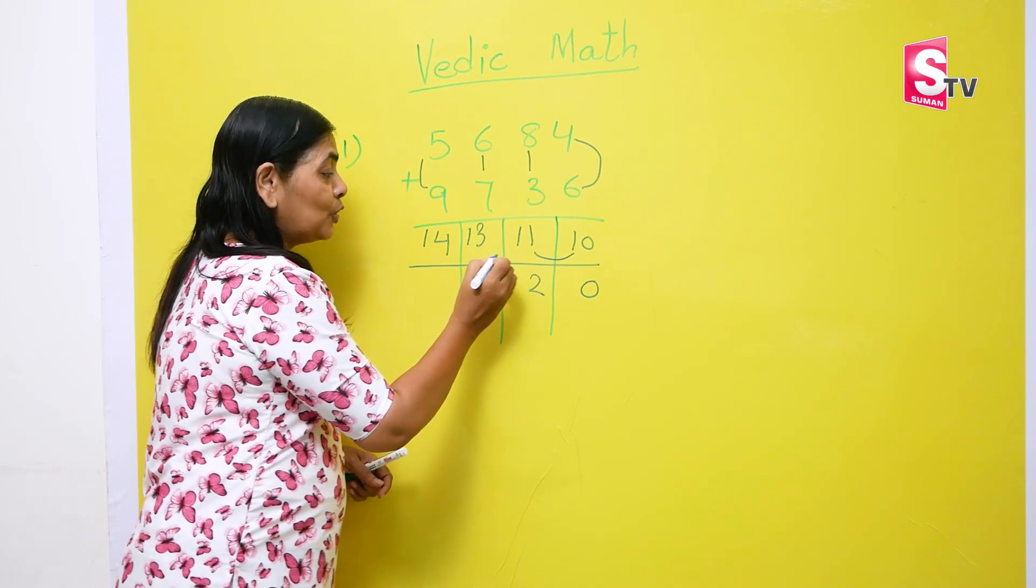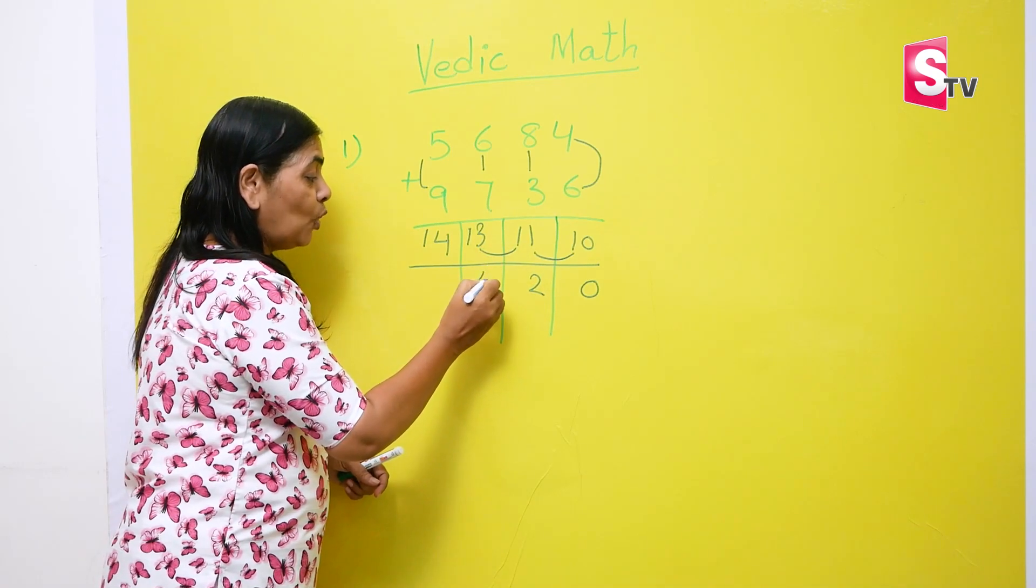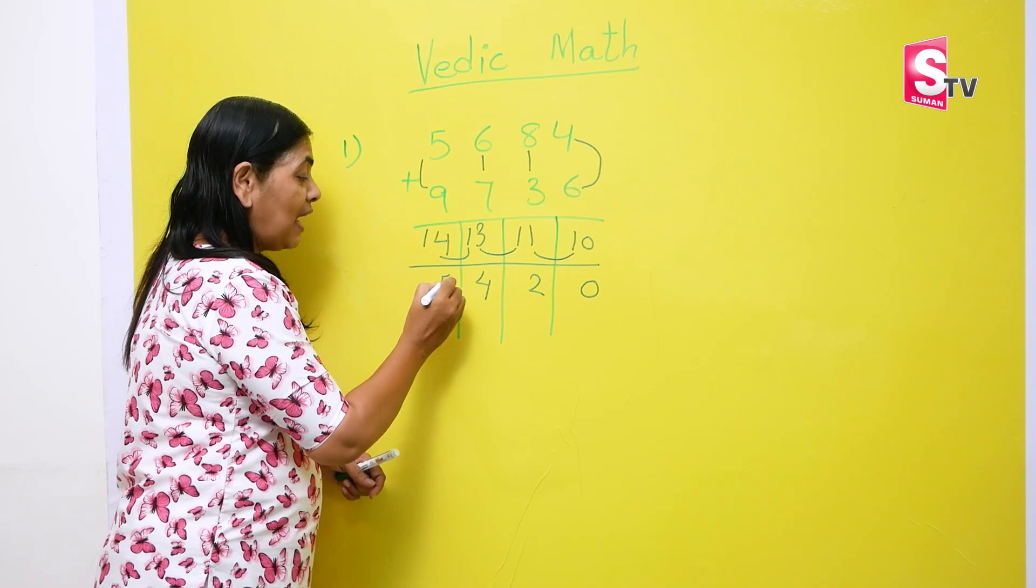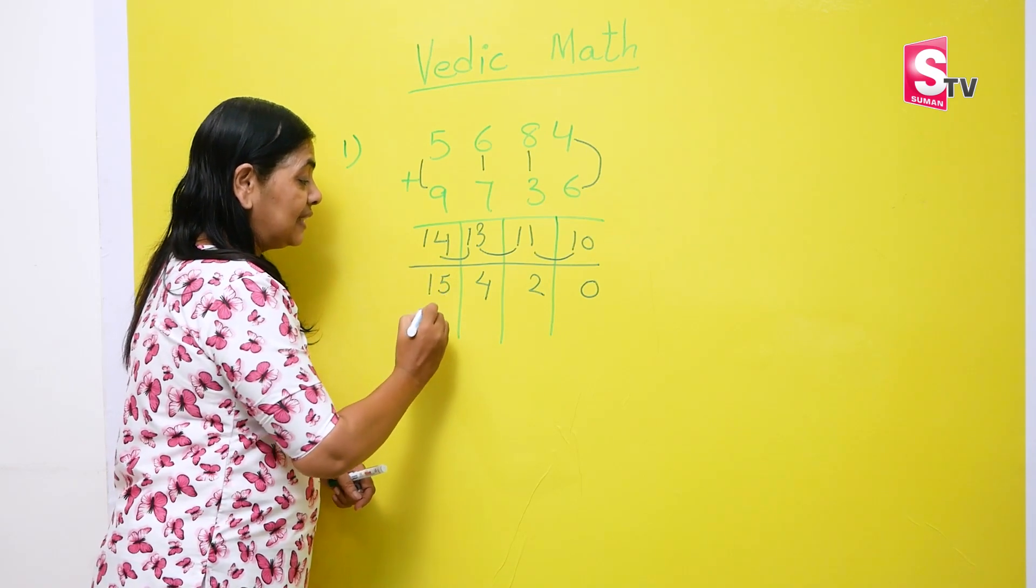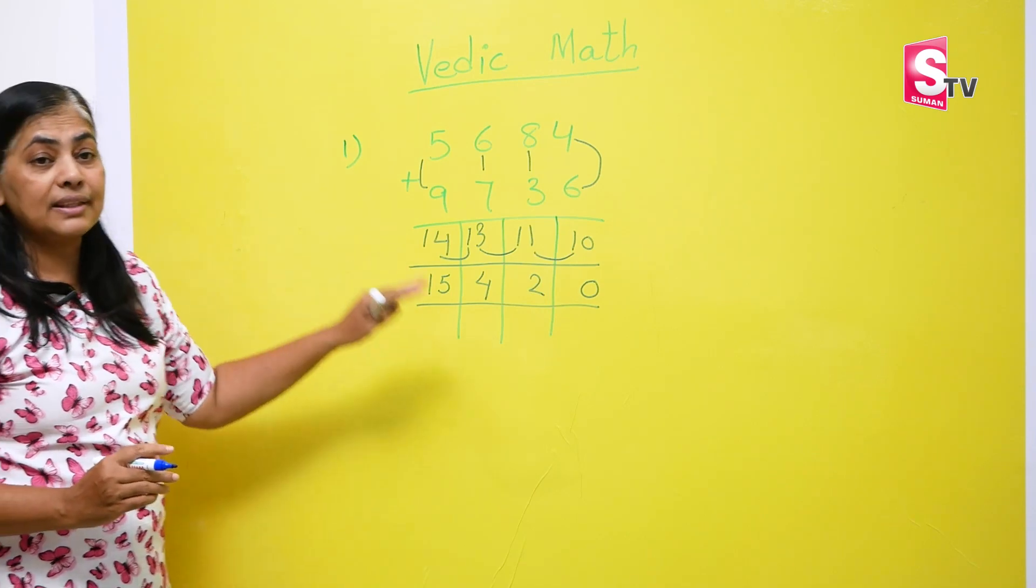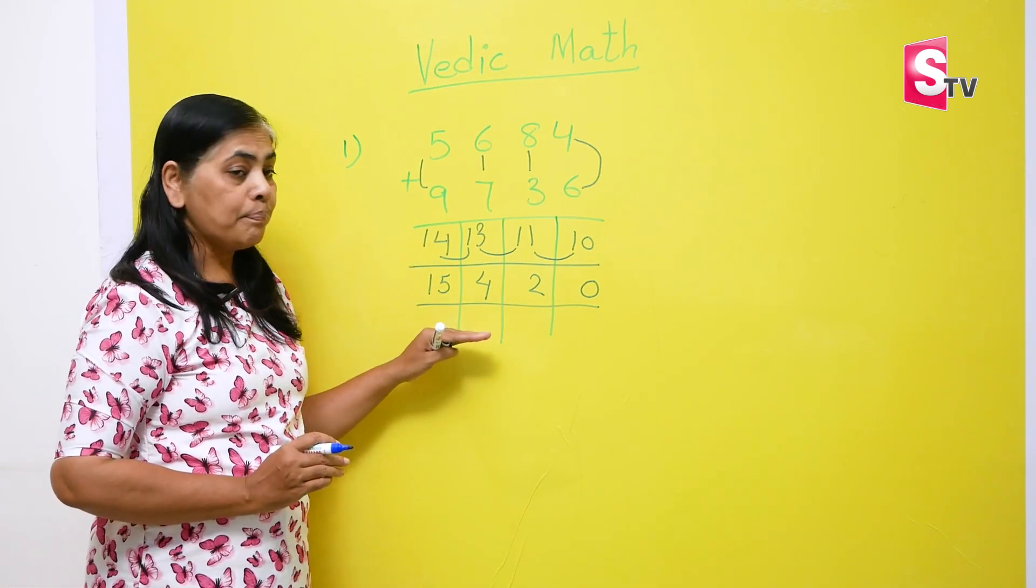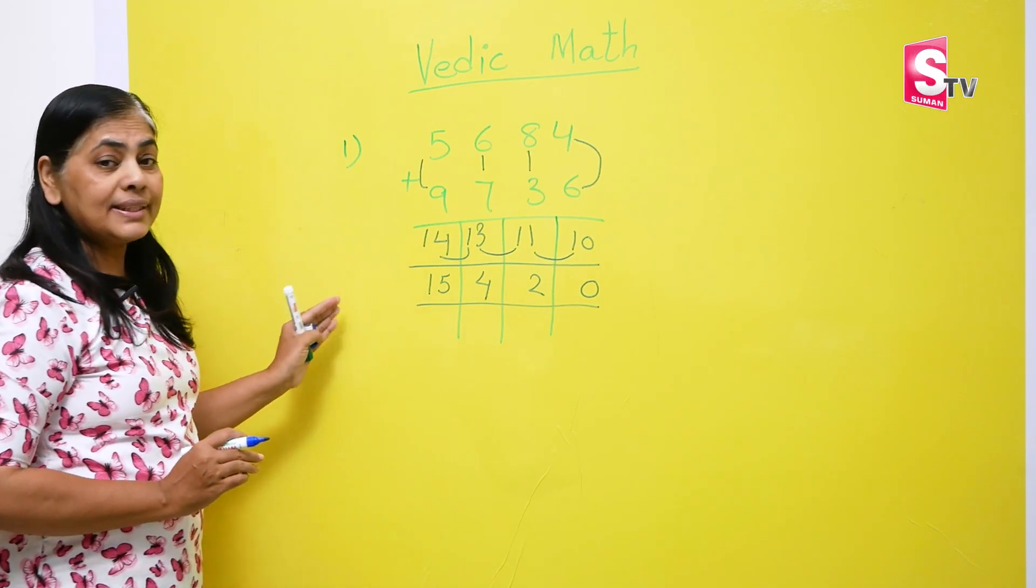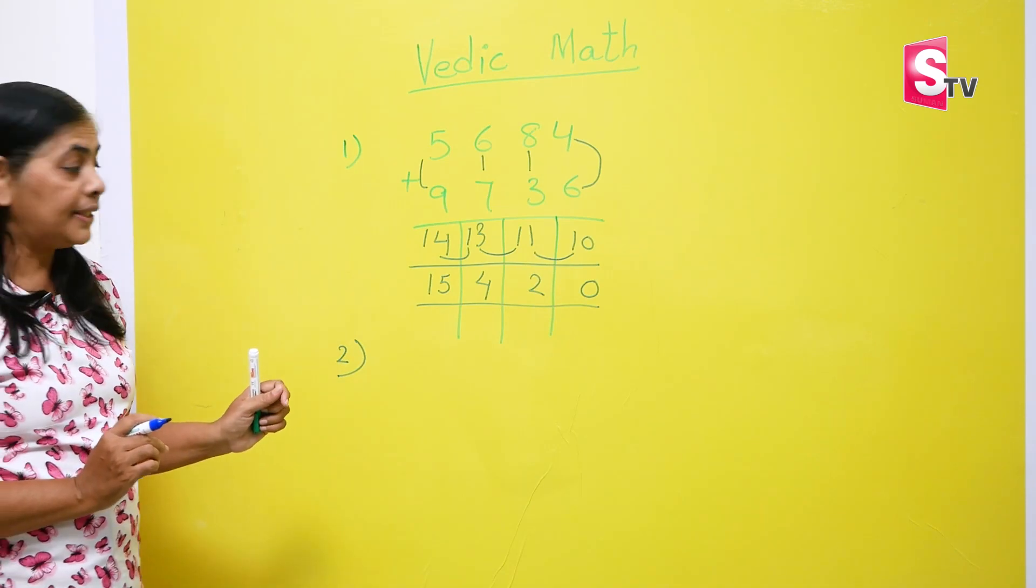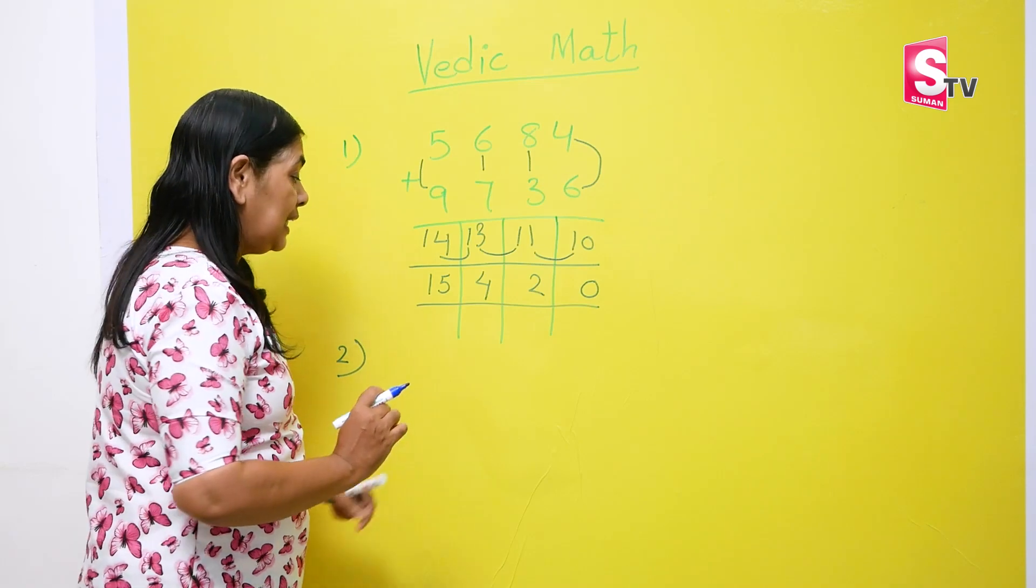This 1 moves to 3. So 1 goes to 3. 3 plus 1 becomes 4. And this 1 goes to 4. So 4 plus 1 becomes 5. And 1 we write as it is. I think you find it much more easy. And this is the way we can do it in very fast way. So let's see another example. Just pay little attention and you will be able to do it very easily.